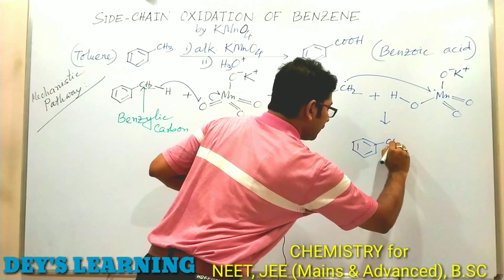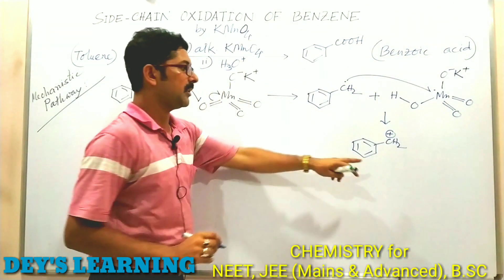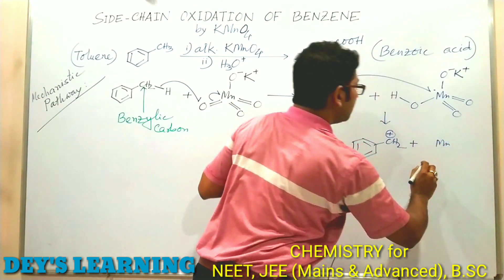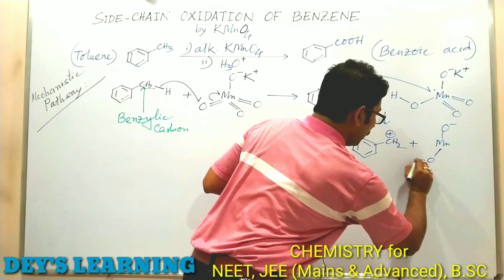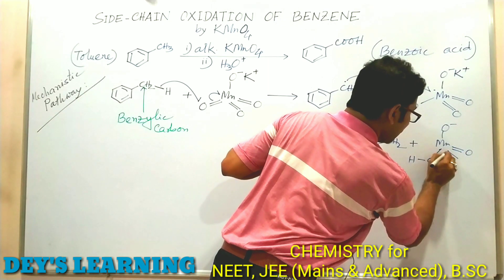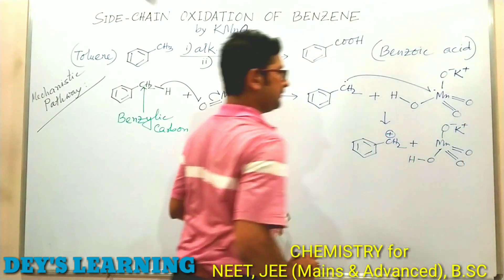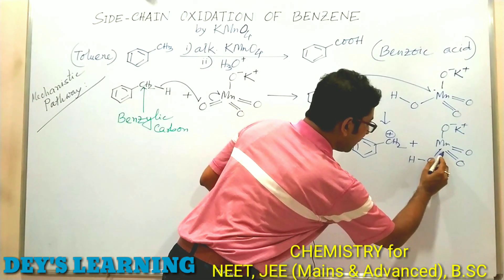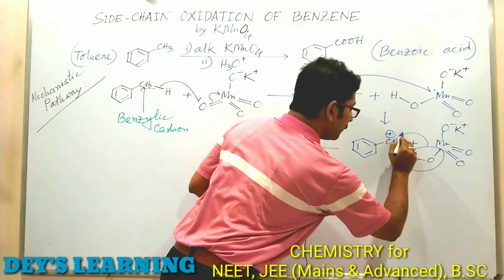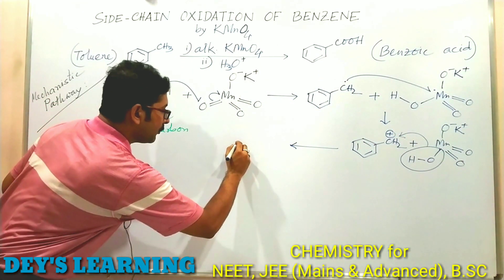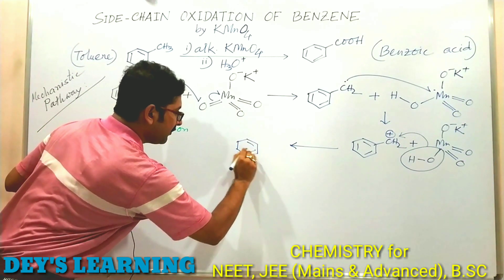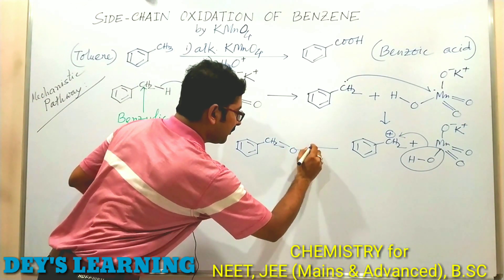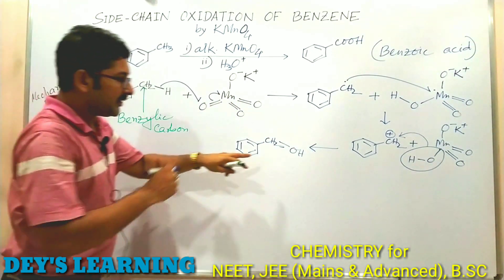After transferring the second electron, the benzylic position carries a positive charge — this is the benzylic carbocation. The manganese species becomes MnO₃²⁻ (Mn(V)). Now the OH⁻ (hydroxide) from the alkaline medium attacks the benzylic carbocation with its electron pair, giving our benzylic alcohol — benzyl alcohol.